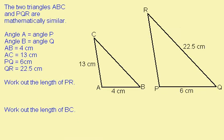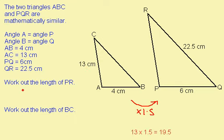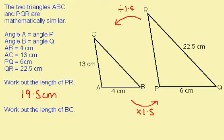Here's a typical exam question for you to try. Press pause and have a go at it. When you're ready for the answers, press play. We're told that the shapes are similar and we have a pair of corresponding sides here. So my scale factor of enlargement is 6 divided by 4, which is 1.5. I'm asked to find PR: 13 multiplied by 1.5 gives me 19.5, so PR is 19.5 cm long. I'm also asked to work out BC. To go this way, I need to divide by 1.5. 22.5 divided by 1.5 gives me 15, so BC is 15 cm long.